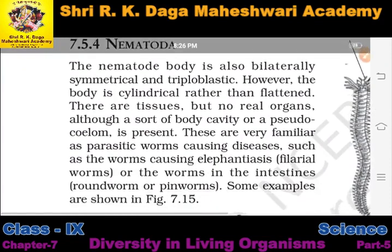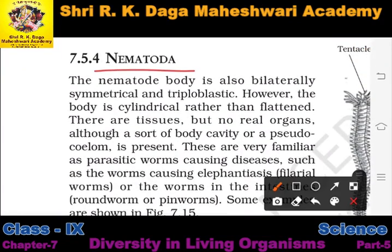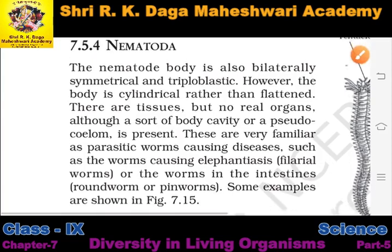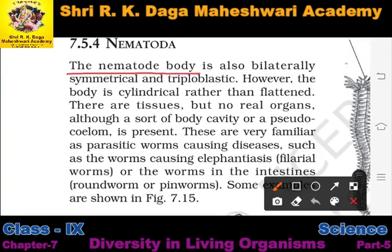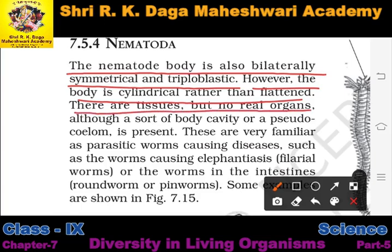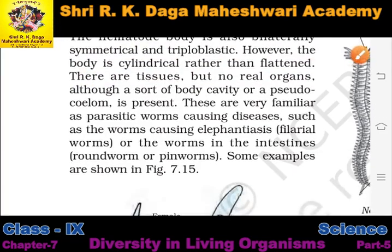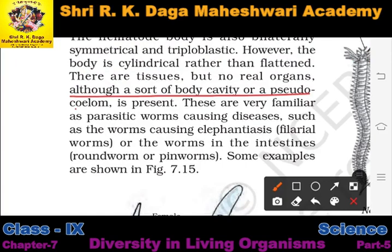The next category is Nematoda. The Nematoda body is also bilaterally symmetrical and triploblastic. However, the body is cylindrical rather than flattened. There are tissues but no real organs, although a sort of body cavity or pseudo-coelom is present.